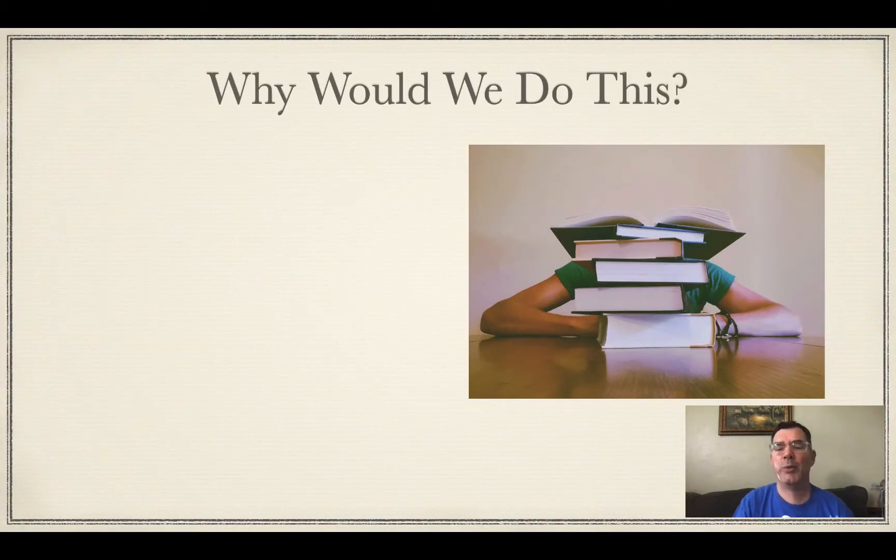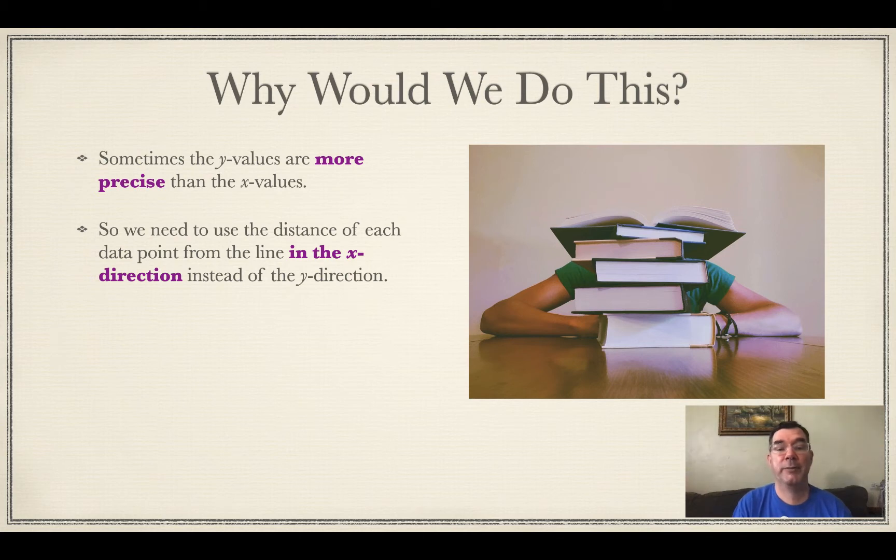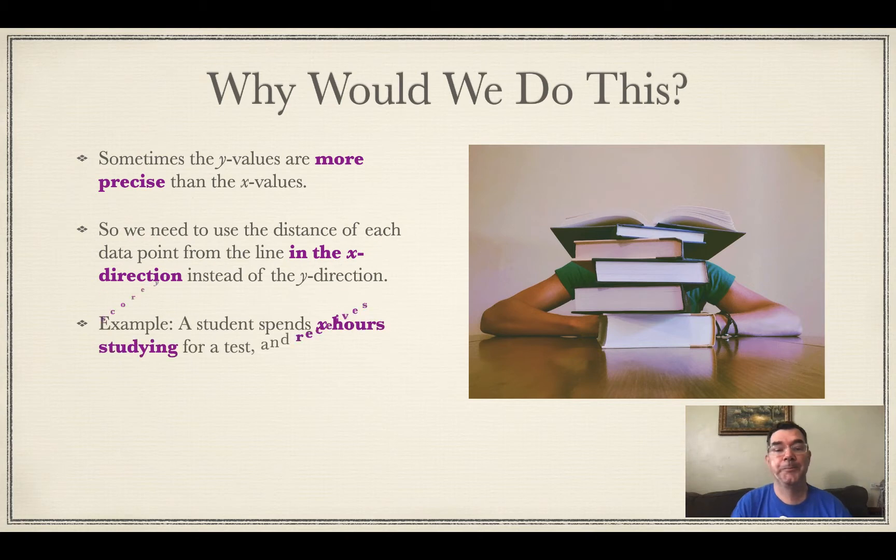So why would we need to do this? Well, sometimes the Y values are more precise than the X values, so we would need to use the distance of each data point from the line in the X direction instead of the Y direction. For example, a student spends X hours studying for a test and receives a score of Y. That test score is going to be more accurate than the student trying to figure out how many hours they spent studying.